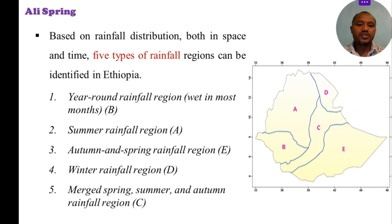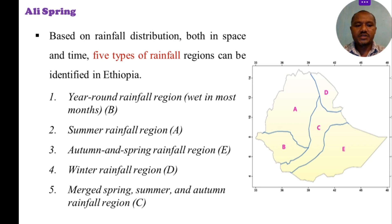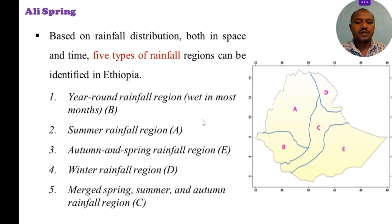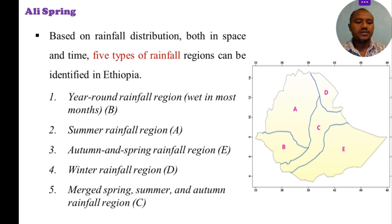Based on the rainfall distribution, both in space and time, 5 types of rainfall regions can be identified. This first one is a year-round rainfall region. The equatorial rainforest type tropical climate is a year-round rainfall type.